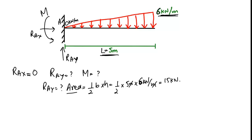Multiplying these out, we get 15 kN. This area of the triangle equals 15 kN, which is the resultant load acting on this beam at the centroid of the triangle.